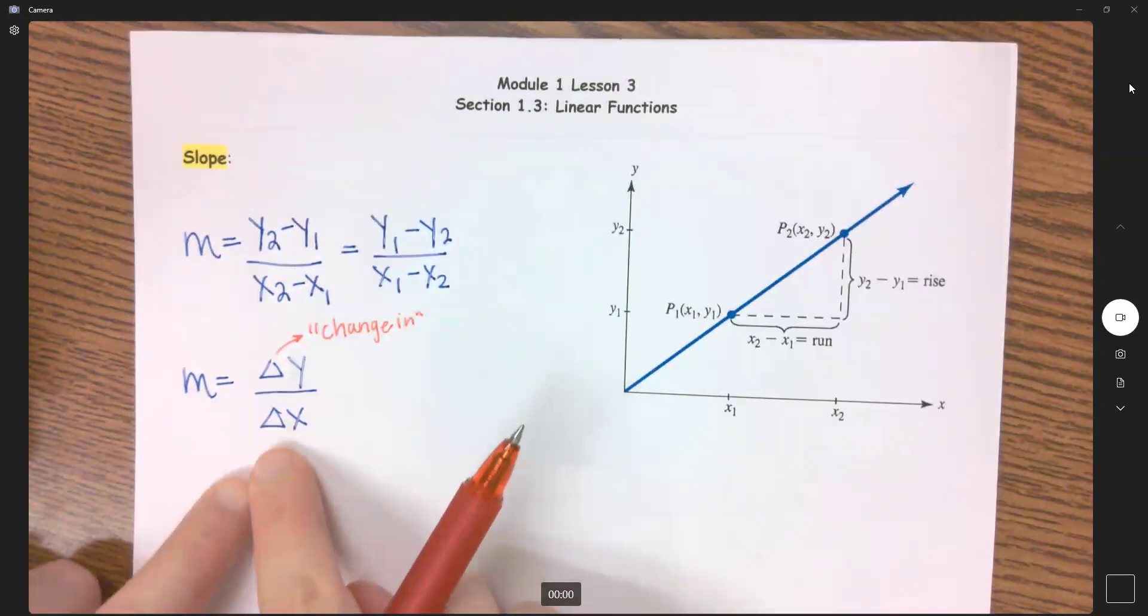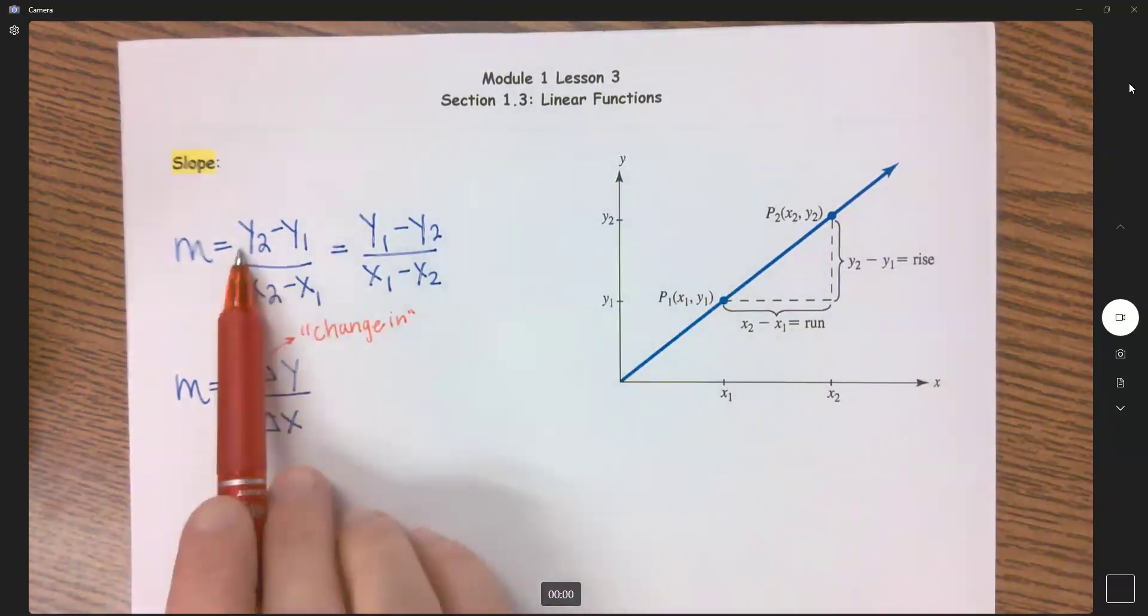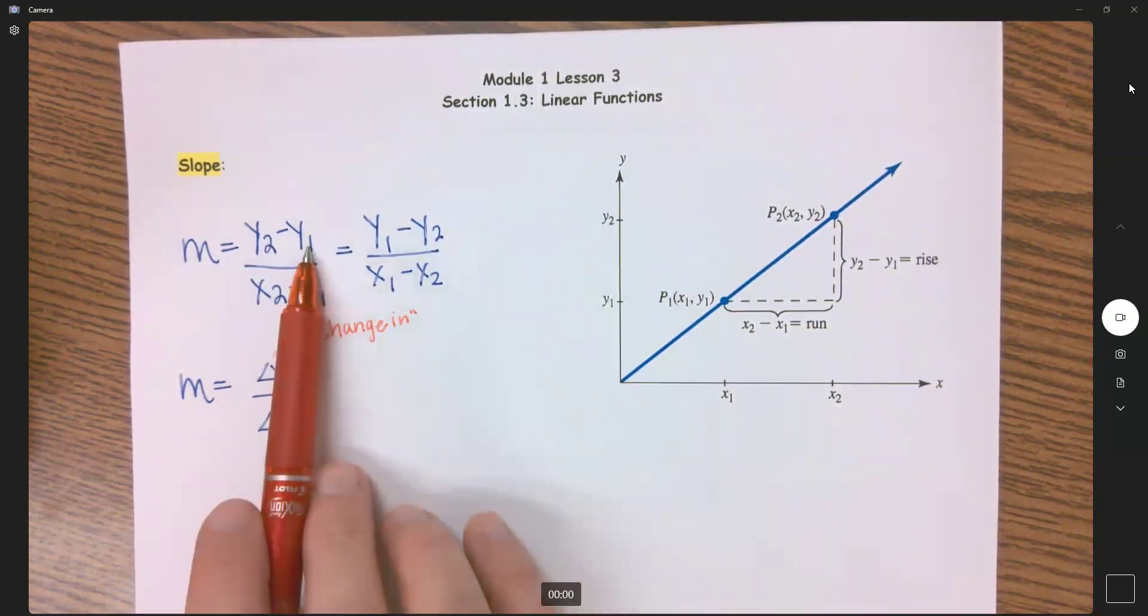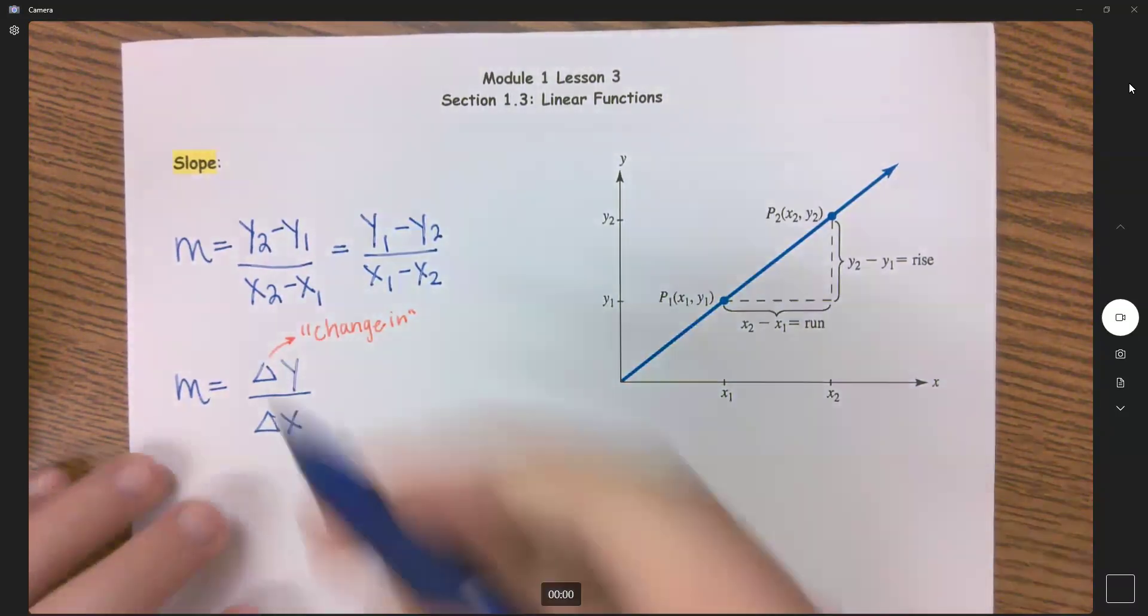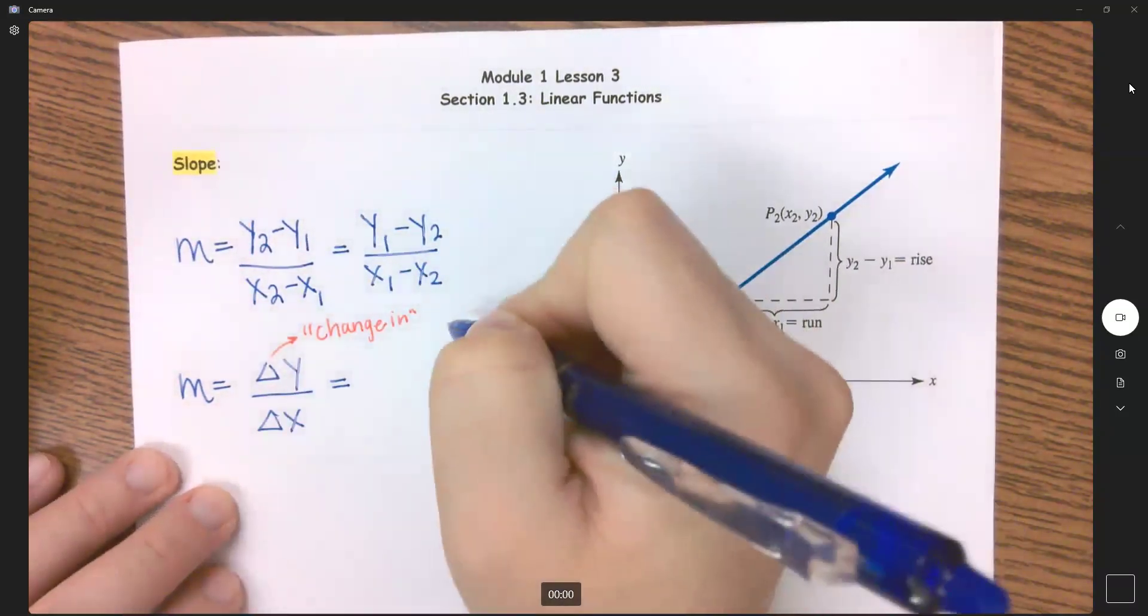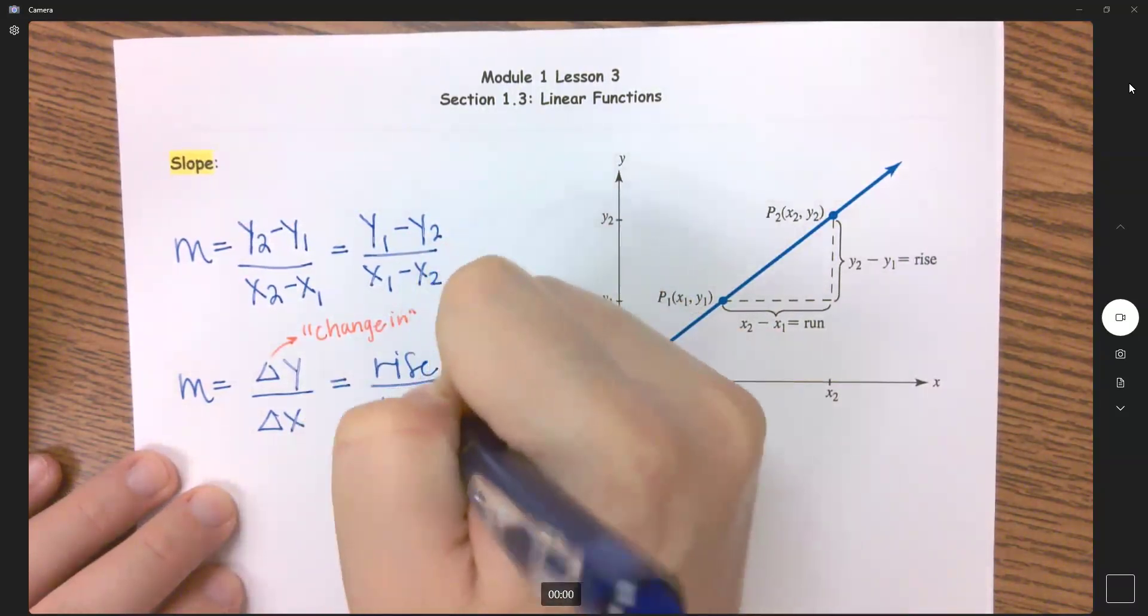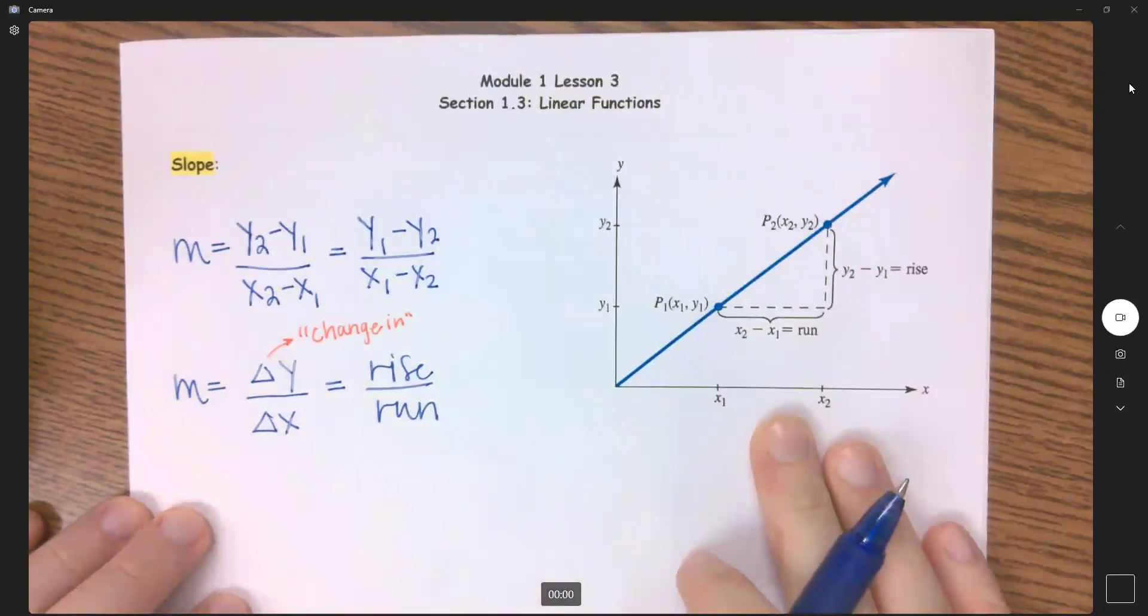So we have the change in y over the change in x, which is exactly what that formula is doing right here. When you subtract, you're finding the difference or the change in your x values over the change in your y values. When it comes to graphing, what we'll be using is rise over run.